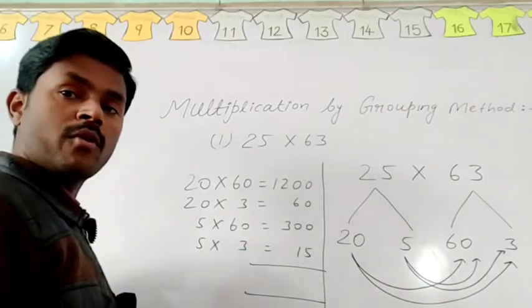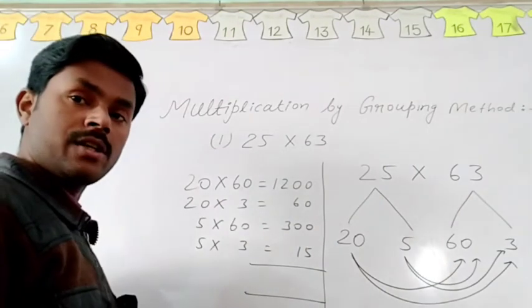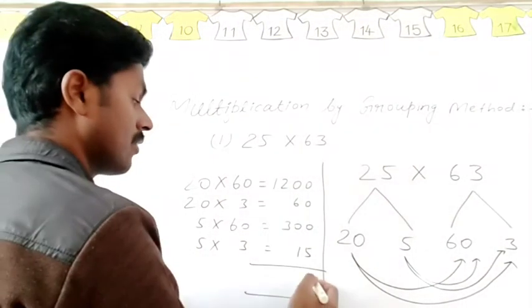Now we have to add these all products. The product will be correct for 25 multiply 63. So add these all numbers.